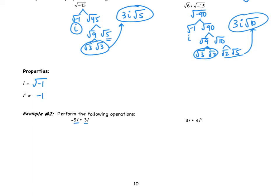Example 2, if I multiply these two numbers, I get negative 15 i squared. i squared, you're not allowed to leave. i squared is just negative 1. So this is really negative 15 times negative 1, which is 15.